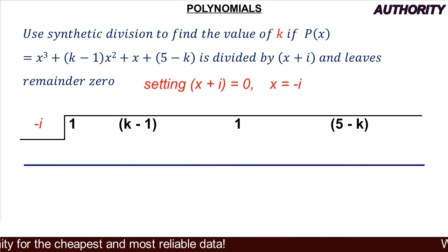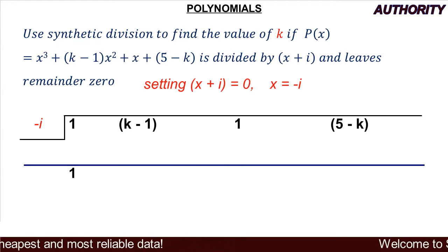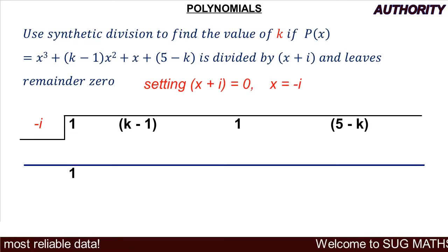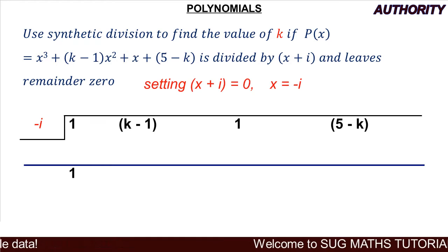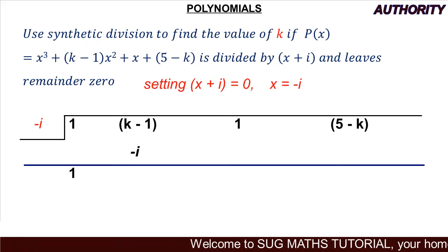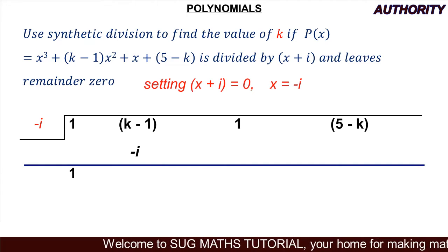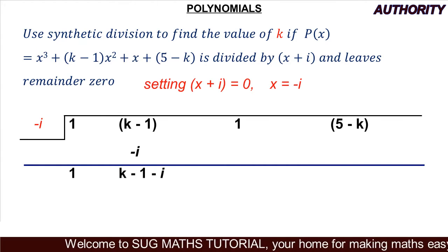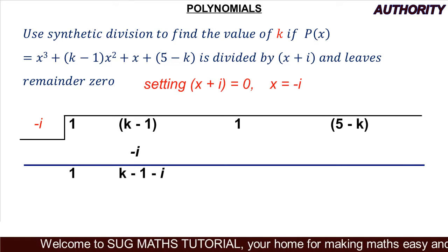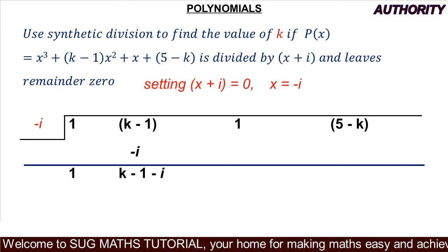We draw a line and bring down the first coefficient, which is 1. We multiply 1 by our divisor −i, giving us −i. We write −i under (k−1) and add: (k−1) + (−i) = k − 1 − i.